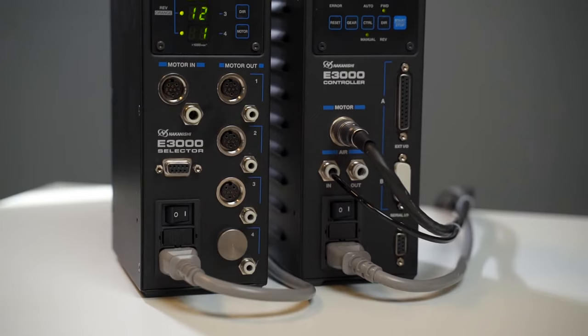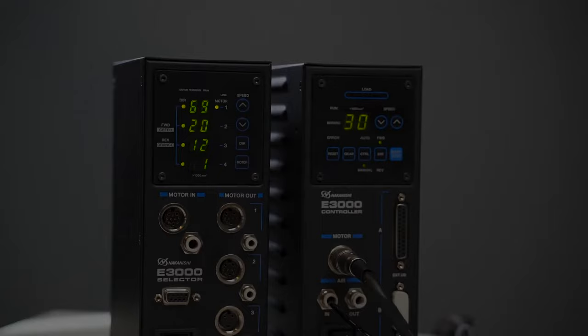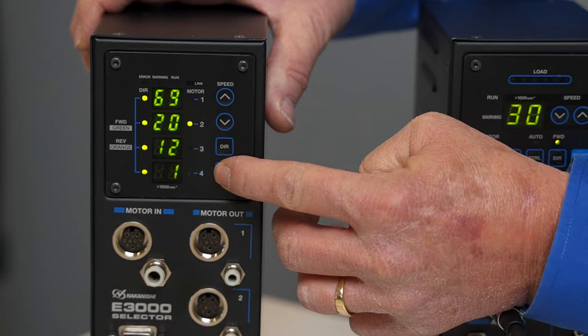This is the NE211, which is called an E3000 control. You can run forward or reverse. Here you have a speed meter and a load meter, so you always know what the tool is doing.